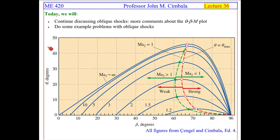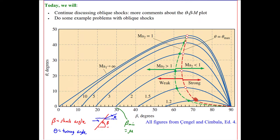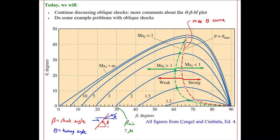Here's our theta-beta-M plot. We plot theta as a function of beta, where beta is the shock angle relative to the incoming flow, and theta is the turning angle — the angle at which the flow suddenly turns after the shock. Beta goes from 0 to 90 degrees, and all constant Mach number curves converge at 90 degrees. For any one of these Mach number curves, the minimum beta is mu, the Mach wave angle. The red dashed curve connects points of maximum theta for each Mach number. Everything to the right of this line is a strong shock, and everything to the left is a weak shock — I'll call this the max-theta curve.